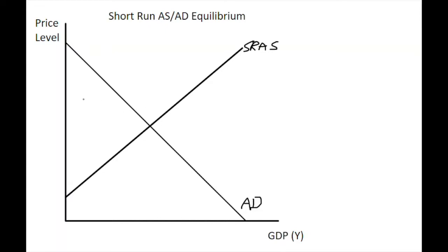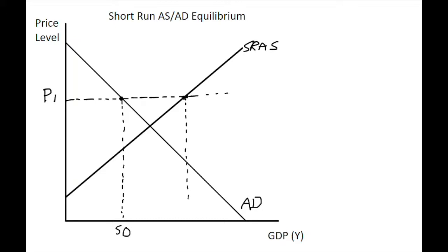If we start off initially at a higher price level than where these two curves intersect, at price level one for example, the aggregate demand curve gives us expenditure of around 50 billion in our economy, while the short run aggregate supply curve gives us output of around 100 billion. With 50 billion being demanded and 100 billion being produced, firms will start to accumulate stocks and inventories, which will signal firms to start reducing price levels to sell off this stock.